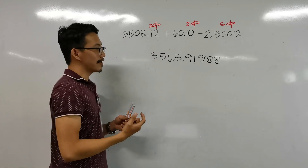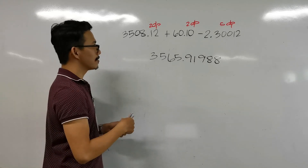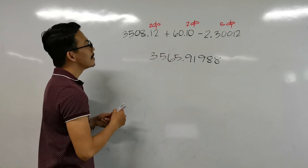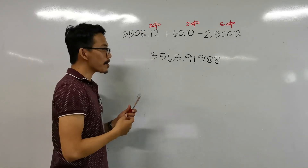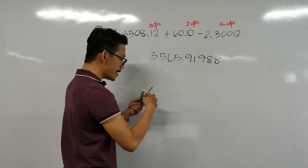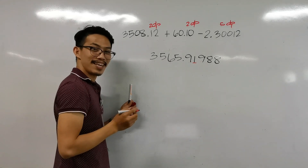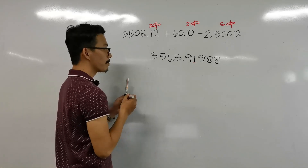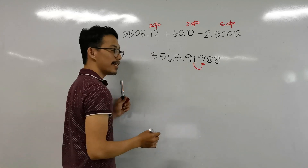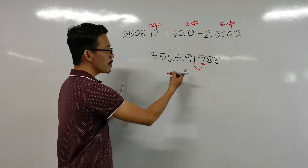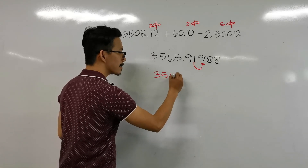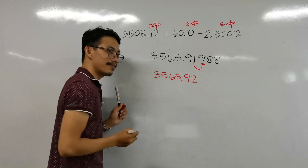What will be our final answer? Remember, addition and subtraction follow the least precise measurement. We can use our trick since all numbers have decimal places: the first has 2, the second has 2, and the third has 4. The least number of decimal places is 2, so our answer must only have 2 decimal places. Take note of the number next to the second decimal — it is 9, which is greater than 5, so we round up. Our final answer is 3565.92.